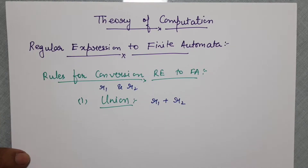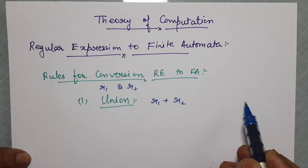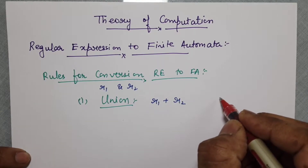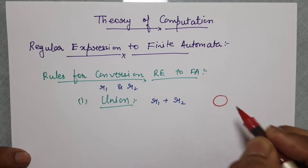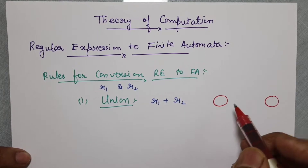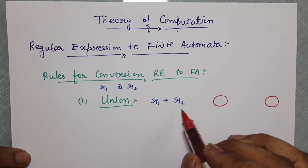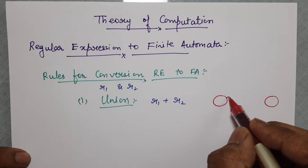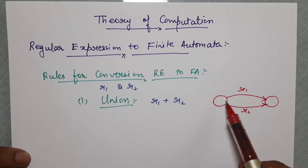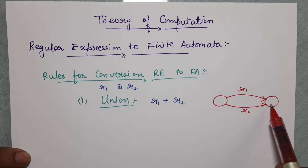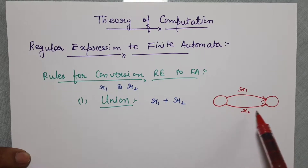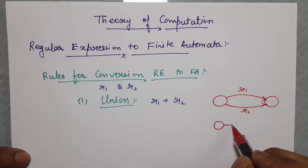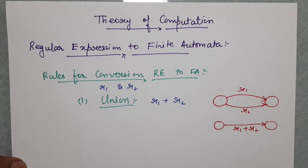The question is how do we denote this regular expression in the automata? If there are two states and you have to represent R1 plus R2, then either you can go from this state to that state by R1, or you can go from this state to that state by R2, and this can be collectively written as R1 plus R2.